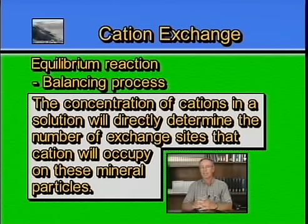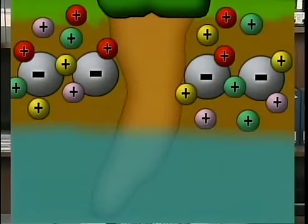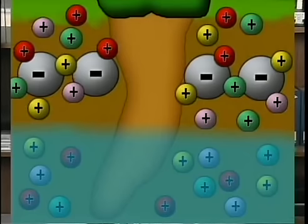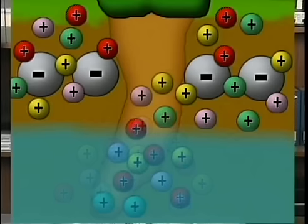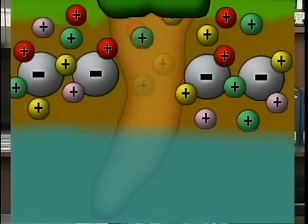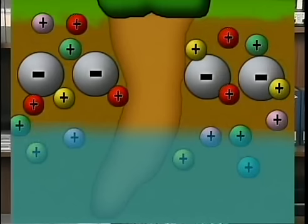Let's say for example that I have a soil. This soil has certain cations on the exchange sites and it has that same cation found in soil solution. If something is taking those cations out of solution — and we hope that something, especially if they're a nutrient cation, would be the roots of the plants growing in that soil — as we reduce the concentration of cations in solution, that will allow some of those being held on exchange sites to come off and go into solution to take their place.